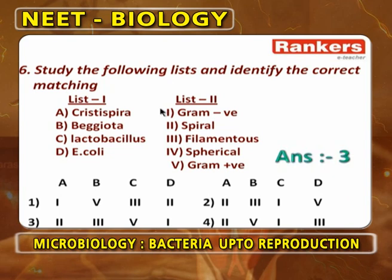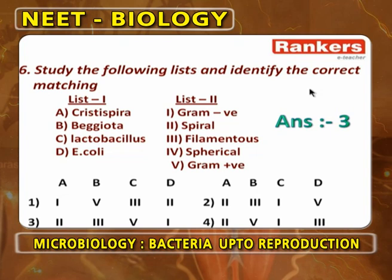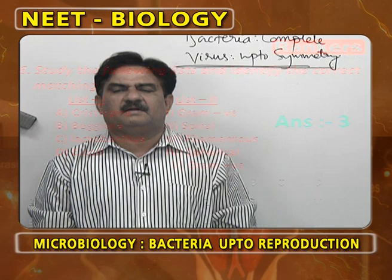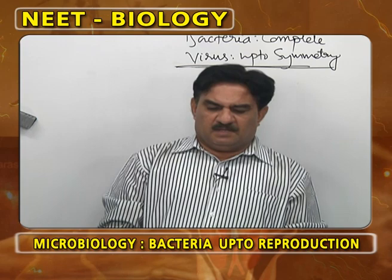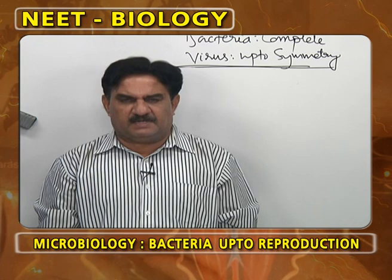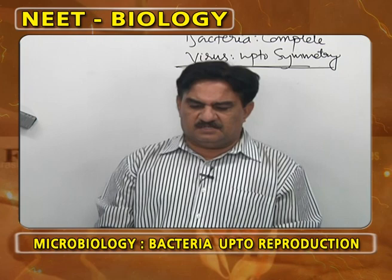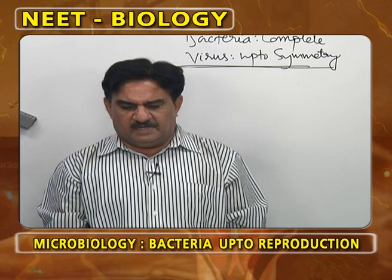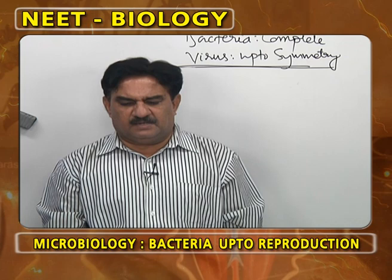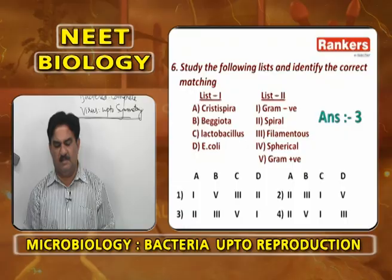Matching column: Crystispira is spiral; Crystispira and Spirocheta are spiral chain-like bacteria. Beggiota is filamentous — it appears like threads or filaments. Lactobacillus is a gram positive bacterium which helps in conversion of milk into curd. Escherichia coli is a gram negative bacterium. So the correct matching is: Crystispira-Spiral, Beggiota-Filamentous, Lactobacillus-Gram positive, E. coli-Gram negative.